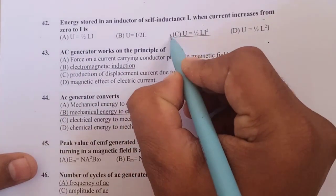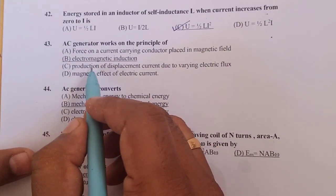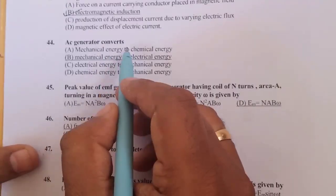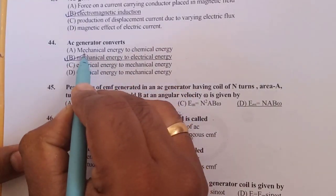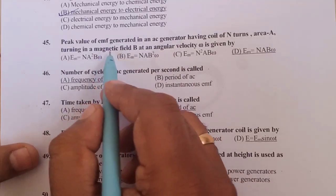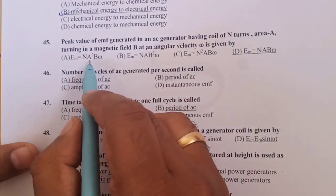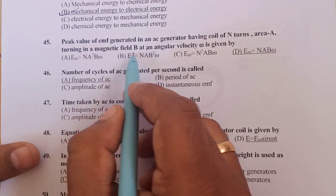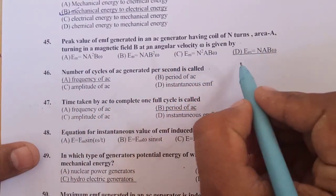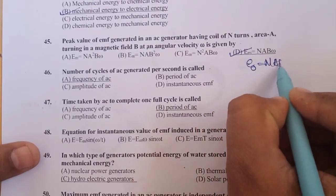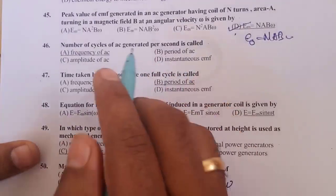AC generator works on the principle of electromagnetic induction. AC generator converts mechanical energy into electrical energy. Peak value of generated EMF in an AC generator having coil of N turns, area A, in magnetic field B and angular velocity ω is given by E₀ is equal to N into A into Bω.